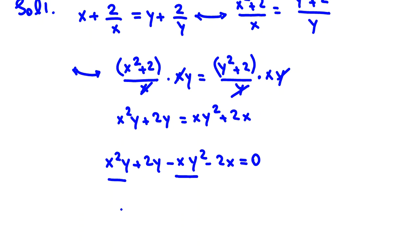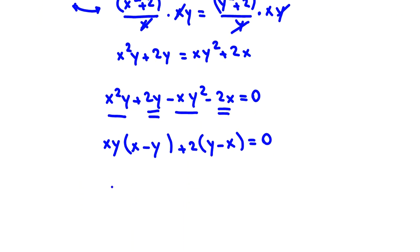If you consider these two terms, we say xy times x minus y. And these two terms, you factor from 2, it will be y minus x equals zero. If we factor from x minus y, it will be xy. Because here it is negative x minus y, it will be negative 2 equals zero.